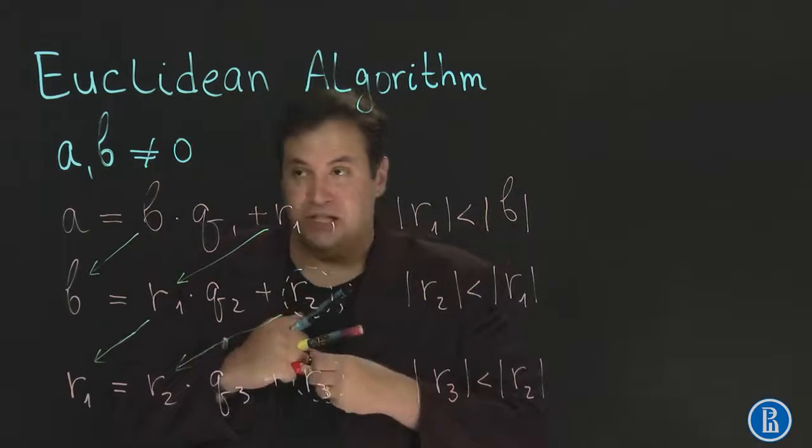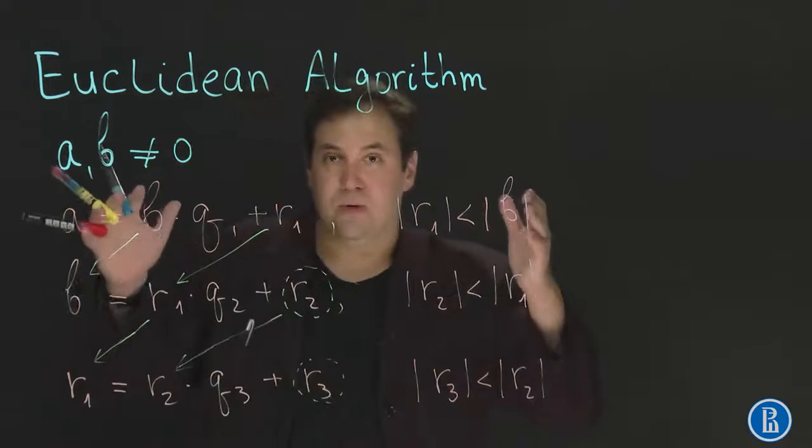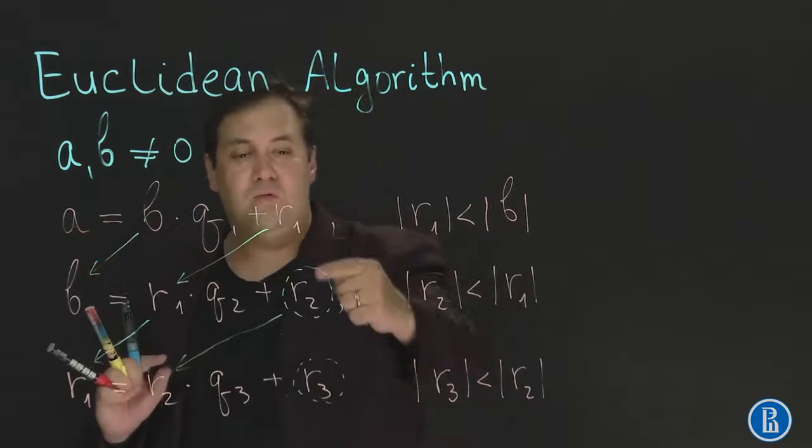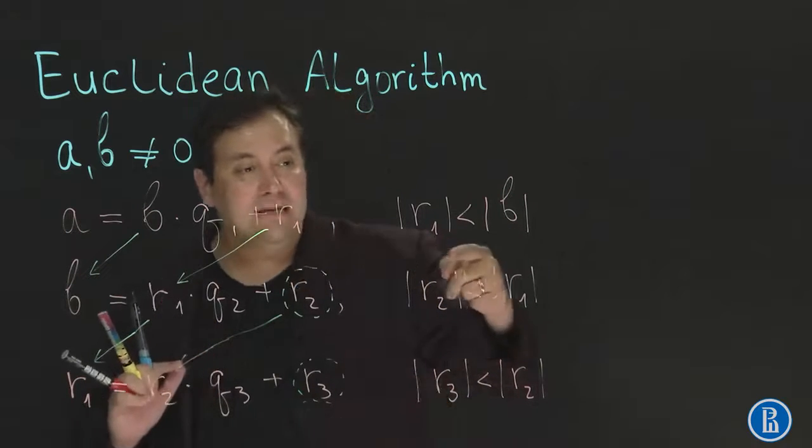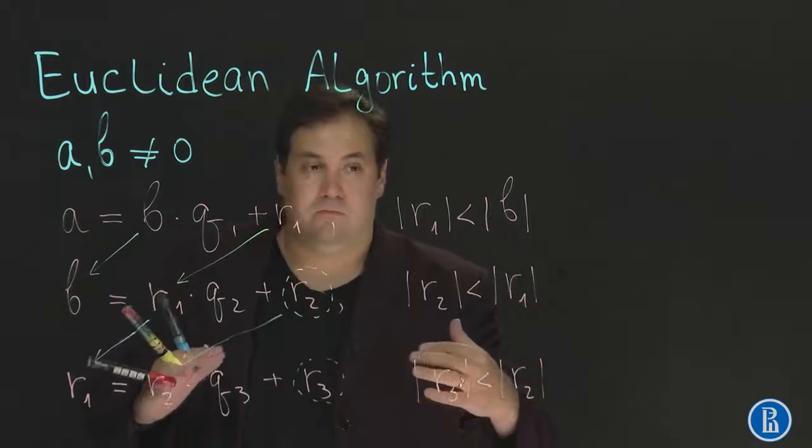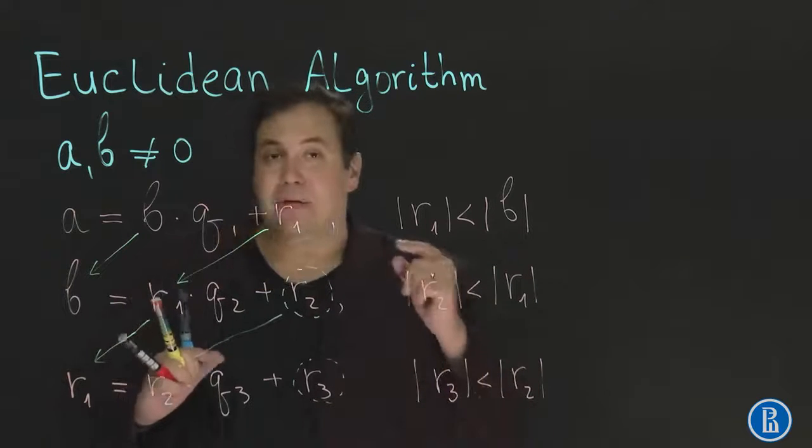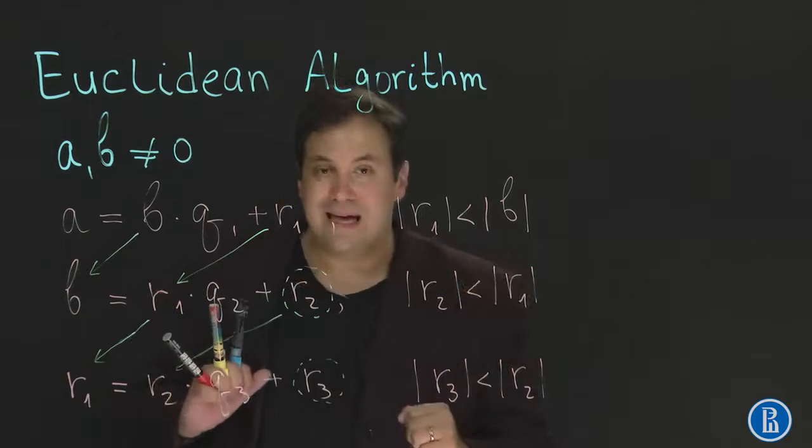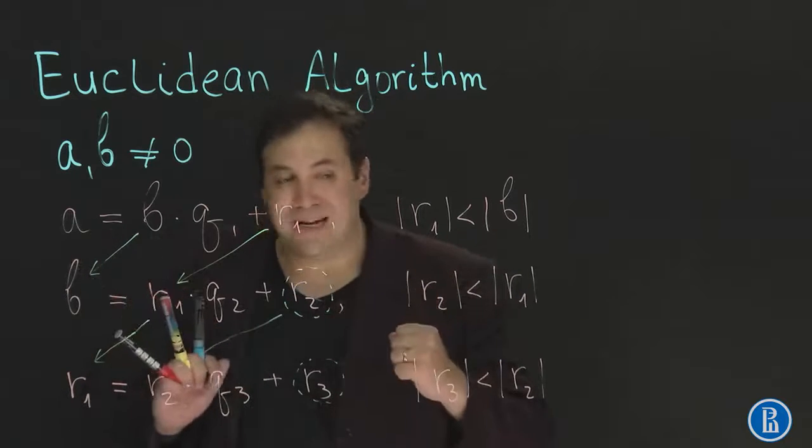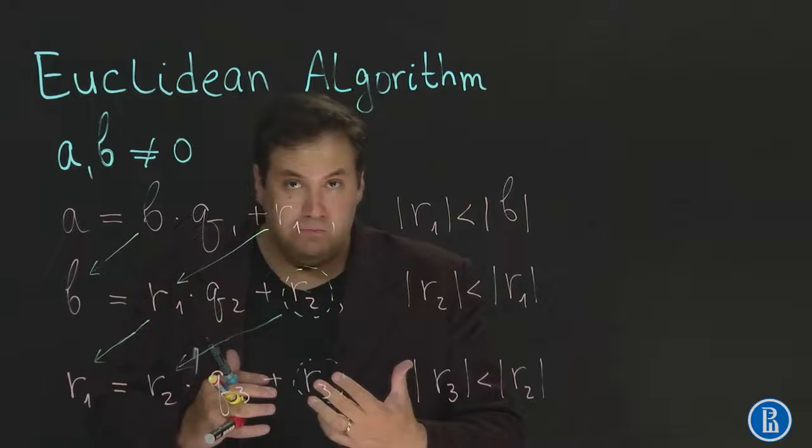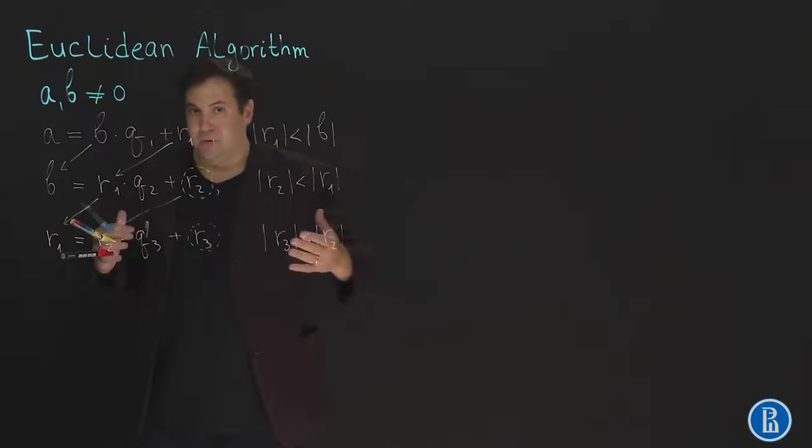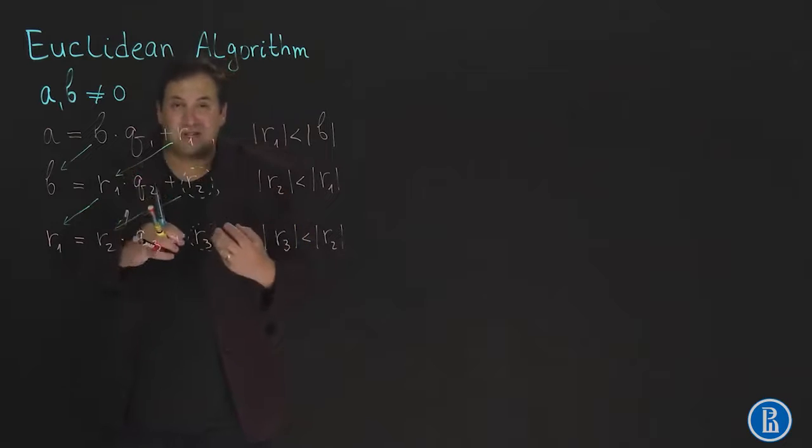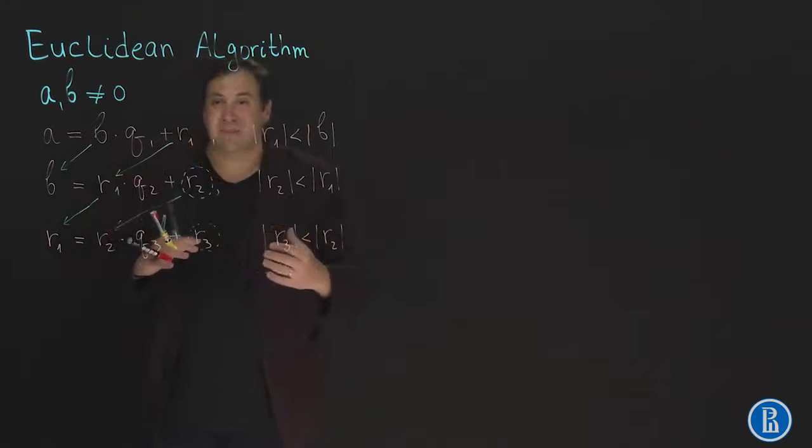Continuing in this way, just using division with remainder, we see that norms of remainders is getting more and more less, it's smaller and smaller. But we know that it is a non-negative integer. Norm of any element of Euclidean ring. So eventually this will have to stop. We cannot decrease non-negative integer infinitely many times.